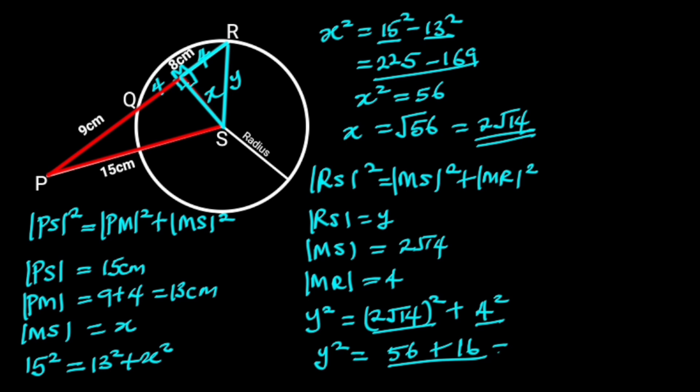56 plus 16 is 72. It follows that Y squared is equal to 72. Taking the square root of both sides will give us Y is equal to the square root of 72. Square root of 72 is 6 root 2.